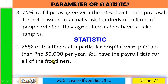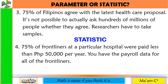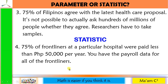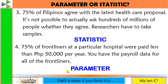Last one: 75% of frontliners at a particular hospital were paid less than 50,000 pesos per year. You have the payroll data for all of the frontliners. Since you have the data for all frontliners, then you have the data of the population. So this is a parameter.